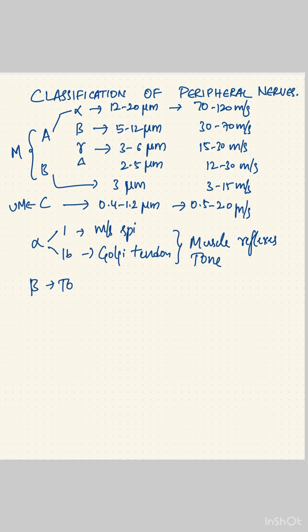Beta fibers are for touch and pressure. Gamma fibers maintain the skeletal muscle tone. Delta fibers are for fast pain, touch, and temperature. B fibers are for pre-ganglionic autonomic fibers.